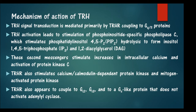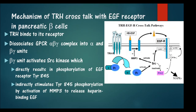TRH activation leads to stimulation of phosphoinositide-specific phospholipase C, which converts phosphatidylinositol diphosphate to inositol triphosphate (IP3) and 1,2-diacylglycerol (DAG). These second messengers activate protein kinase C and increase intracellular calcium concentrations. TRH also stimulates the calcium-calmodulin-dependent protein kinase and the mitogen-activated protein kinase.